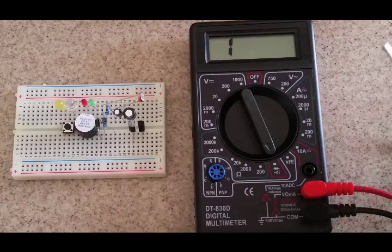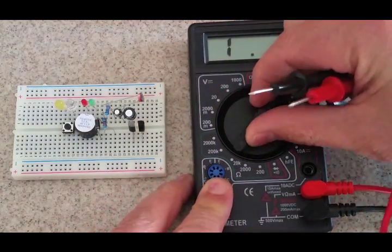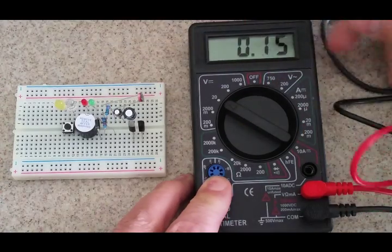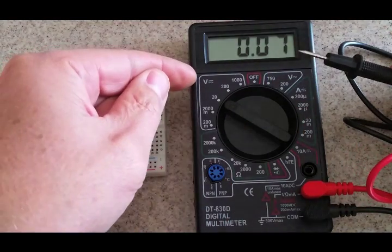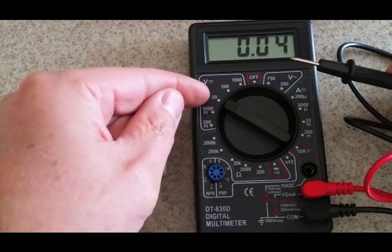The next thing we're going to measure are some voltages. So I'm going to take my meter and put it over here to the DC voltage section. And right now it's on 20 volts.